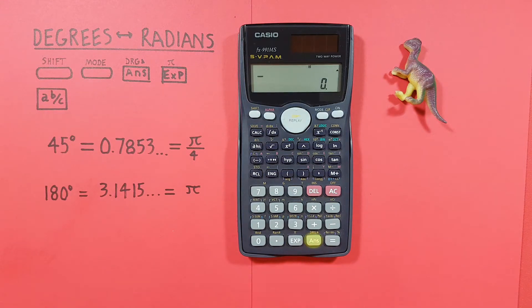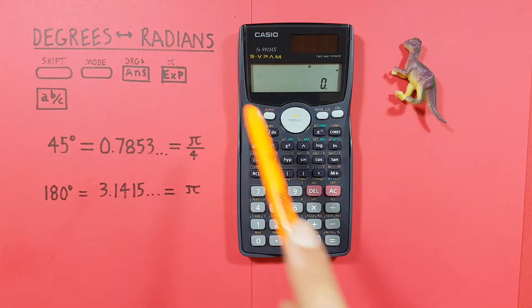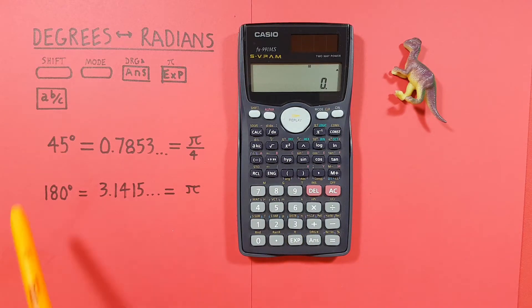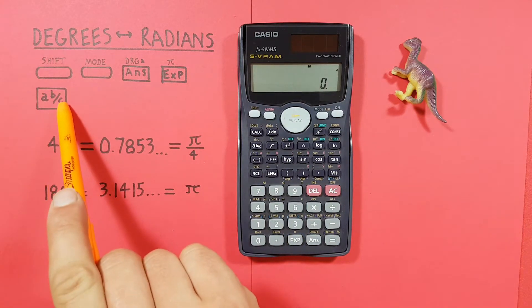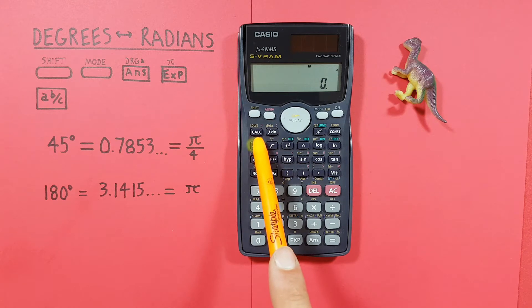The exp key with the shift function of PI, located here. And the fraction key, or the ABC key, located here.